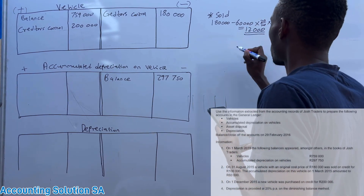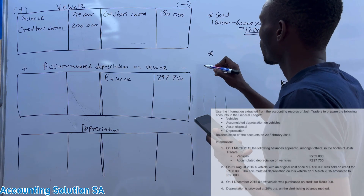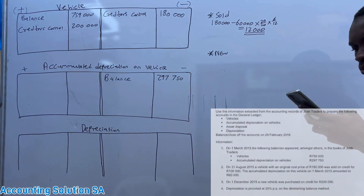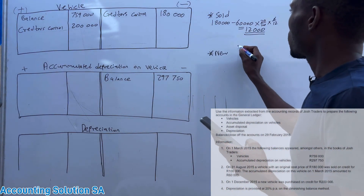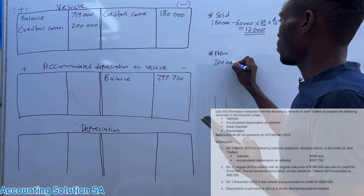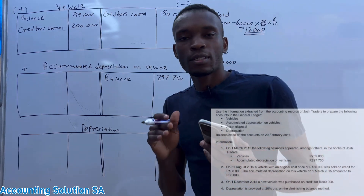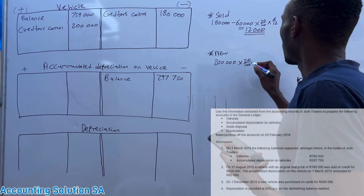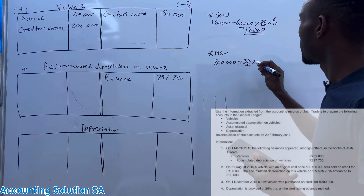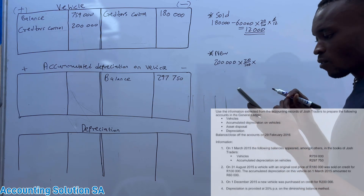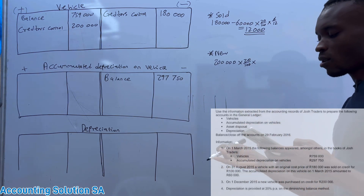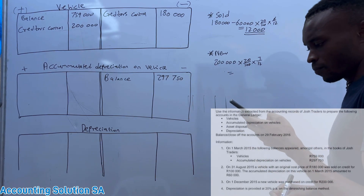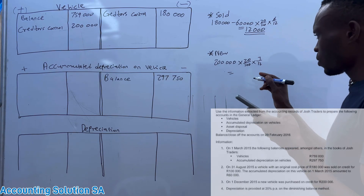Now for the new vehicle that was bought. We bought it for 200,000. It is still new, which means accumulated depreciation is zero, so we just multiply 200,000 by 20%, then multiply by how many months — from December, January, February — that is 3 over 12. If you do this calculation, you get 10,000.